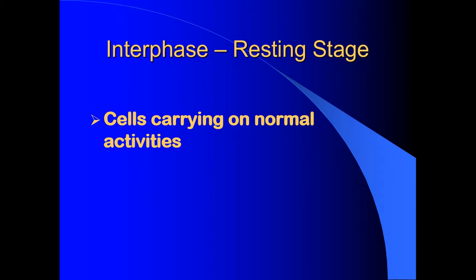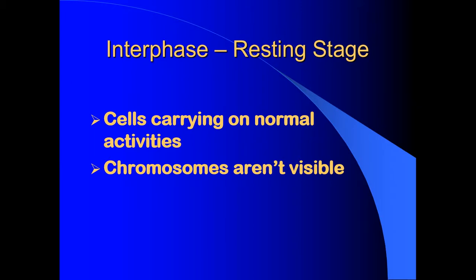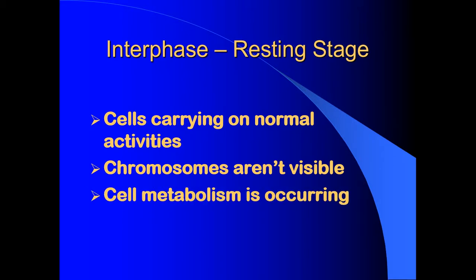Interphase is a resting stage. In interphase, your cells are carrying on all their normal activities. They are doing respiration, producing energy, maintaining homeostasis, and producing all of the chemicals that your body needs in order to function. In this stage, your chromosomes aren't visible — your DNA is in strand form, just a big clump of DNA, not the characteristic chromosomes you see in pictures. Cell metabolism is occurring: the cell is producing energy, getting rid of waste, and doing all the things that a cell does. This stage occurs before mitosis.